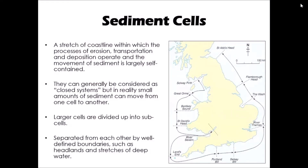It's probably worth starting by defining what we mean by a sediment cell. We can define a sediment cell as a stretch of coastline within which the processes of erosion, transportation and deposition operate, and the movement of sediment is largely self-contained. Within a sediment cell, sediment is moved around within the cell but doesn't really move from one cell to the next, so we can consider them as being closed systems. In reality, a little bit of sediment does move from one sediment cell to the next, but broadly speaking the sediment is simply cycled around within an area rather than moving from one area to another.